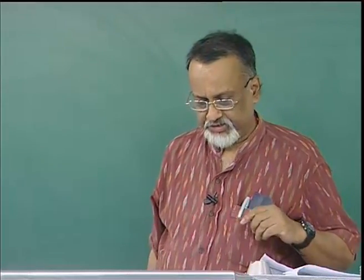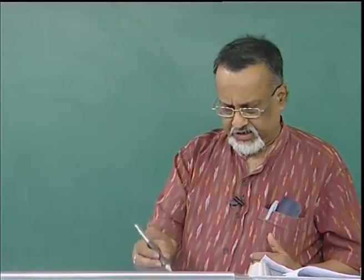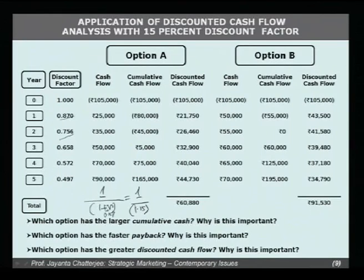On the presentation from the last session, I have received some questions which I will briefly clarify. With respect to the two marketing strategy options — Option A and Option B — with a discounted cash flow using a discount rate of 15 percent: how did we arrive at 0.87 or 0.756? The formula is simply 1 divided by (1 + r). In the first instance it is 1 divided by 1.15, since r equals 0.15, which leads to approximately 0.87.